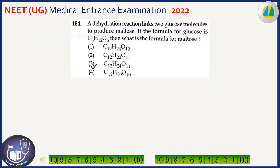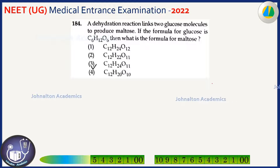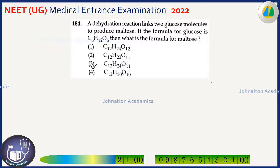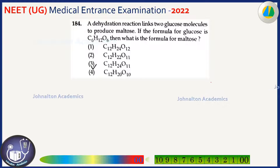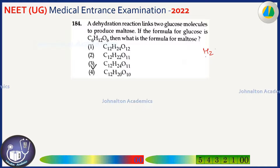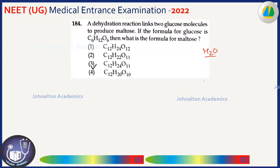A dehydration reaction links two glucose molecules to produce maltose. The formula: C₆H₁₂O₆ + C₆H₁₂O₆ gives C₁₂H₂₄O₁₂, but since it is a dehydration/condensation reaction, one H₂O molecule is removed — two hydrogens and one oxygen. So the product is C₁₂H₂₂O₁₁. The second option is the correct one.